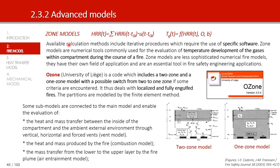Zone models use iterative procedures requiring specific software, and are used for evaluation of gas temperature development within a compartment during a fire. One of the most widely known zone models is Ozone, developed by the University of Liège. It includes a two-zone model and a one-zone model, and it is possible to switch from two-zone to one-zone when certain criteria are met. Ozone deals with localized fires and fully engulfed fires in a compartment.